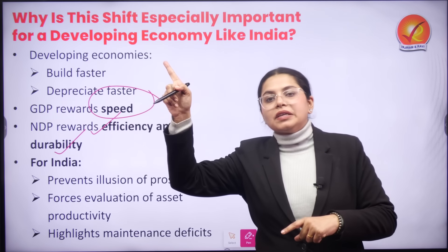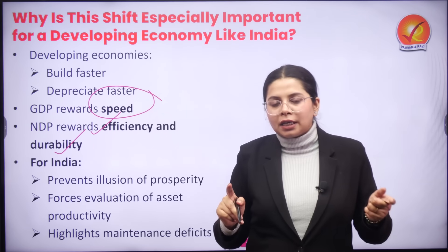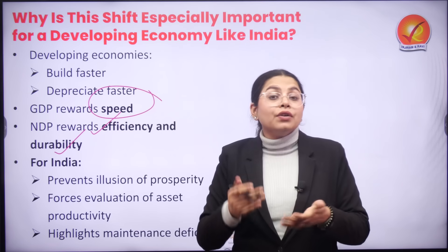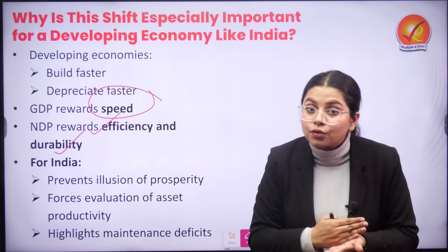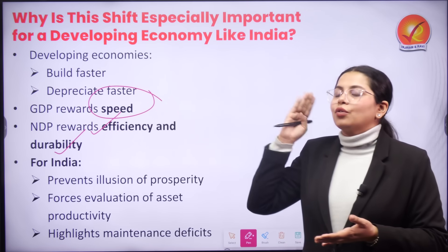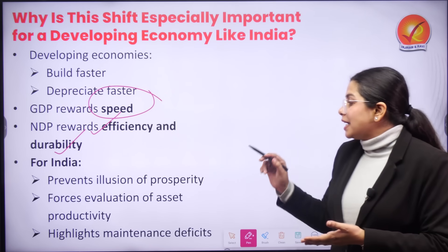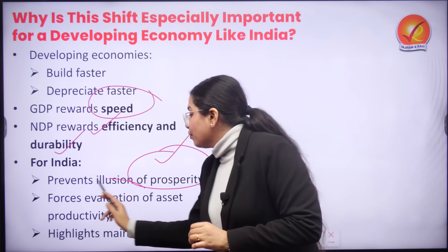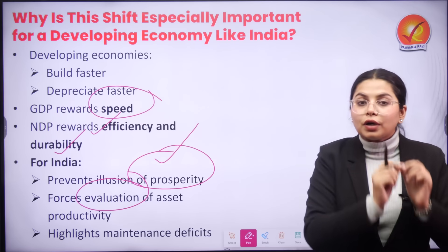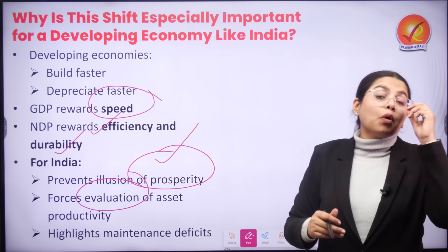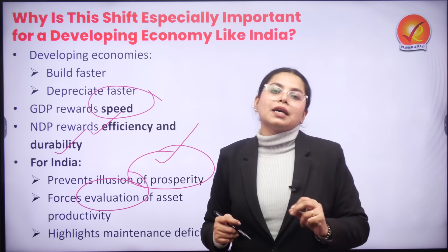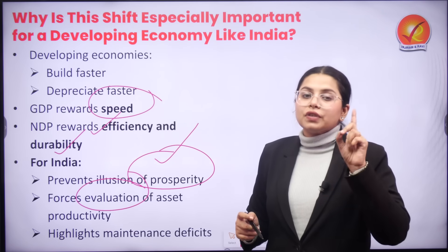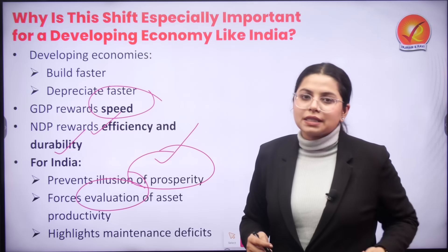Going back to the family example: if we keep assuming we are earning 10 lakhs, we plan accordingly. But if we know the real scenario — that we are earning 7 lakhs — we might plan better and address the situation better. Same is the scenario with India. Making this switch will allow India to prevent the illusion of prosperity, focus on sustainability, properly re-evaluate productivity tied to assets, and identify maintenance gaps — ensuring growth that is not just speedy but also sustainable.